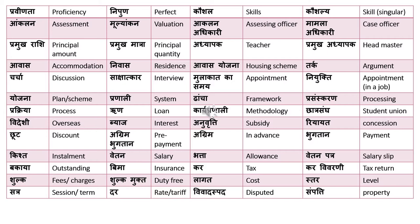'Pramukh Rashi' means principal amount — these words come in the context of loans, such as student loans. 'Pramukh Matra' means principal quantity, as 'Matra' is quantity and 'Pramukh' is principal. 'Adhyapak' means teacher. 'Pramukh Adhyapak' is headmaster or principal — the head of the school.